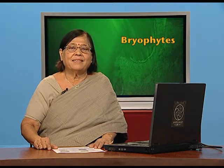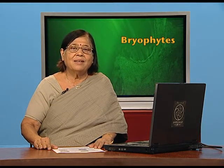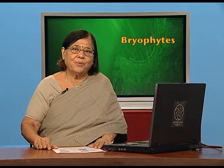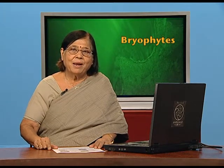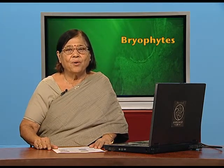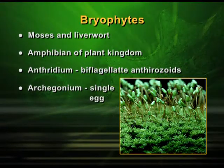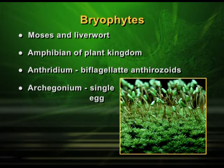Again we will have sex organs like antheridium and archegonium. That is about bryophytes. As mentioned, the good examples are mosses and liverworts, and you can see mosses growing very easily on rocks near water bodies — quite green in colour.